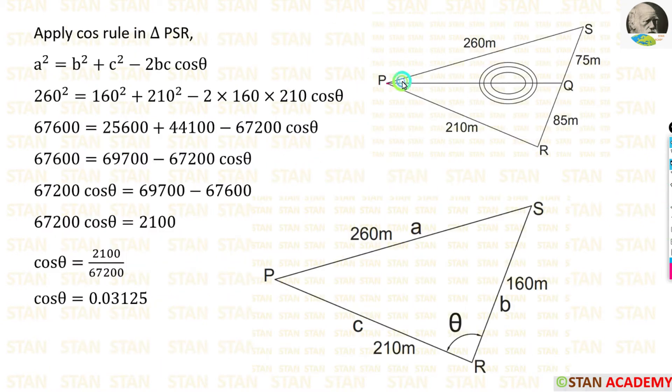From this figure, first I am going to take the triangle PSR. Here, we can add RQ and QS. 85 plus 75, we will get 160 meter. In the triangle PSR, we are going to apply cosine rule.